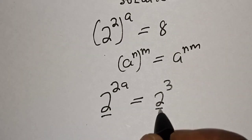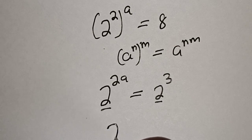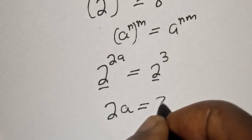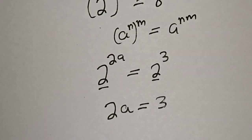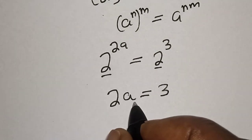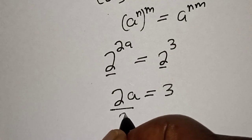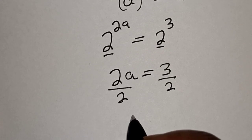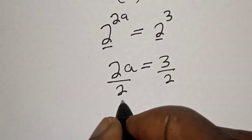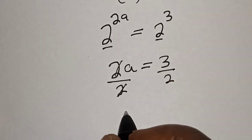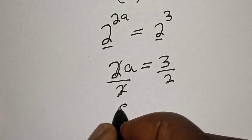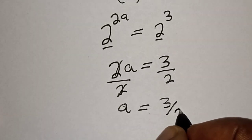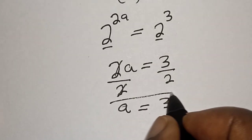Then we have 2a is equal to 3. Now let's divide both sides by 2, divided by 2, divided by 2. Then this one will cancel this. a is equal to 3 over 2. That is our answer.